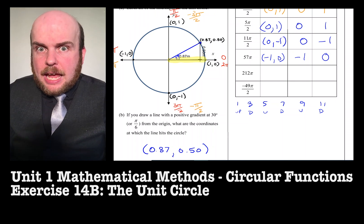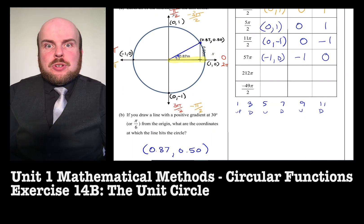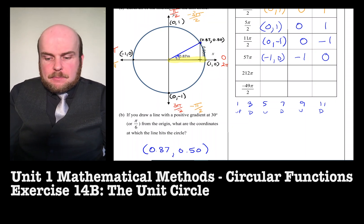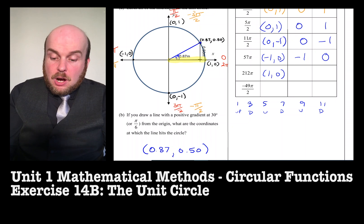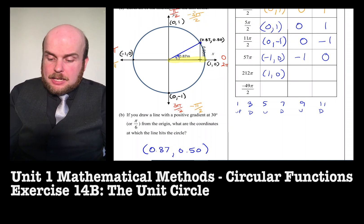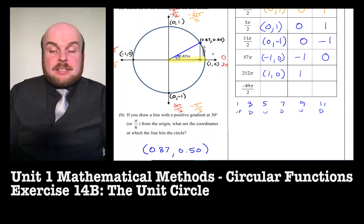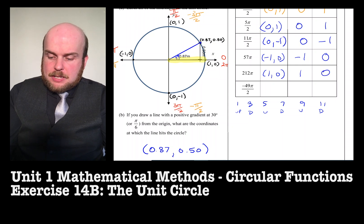Now, I just gave the game away for the next one, which says 212 pi. Well, that's an even number, so it's going to be the one on the right. So the coordinates will be 1, 0. So cos of 212 pi is going to be 1, and sine of 212 pi is going to be 0.